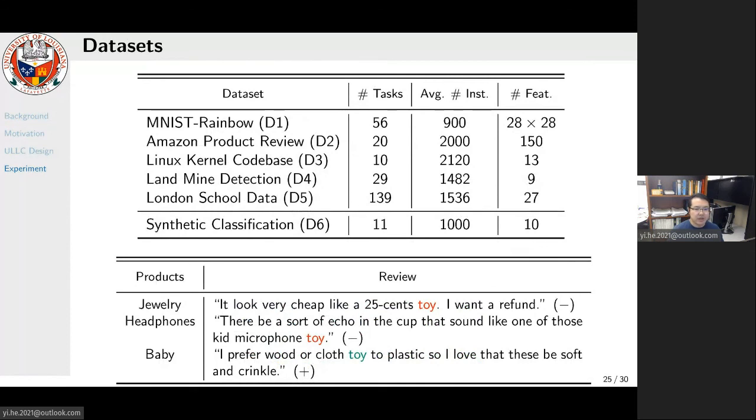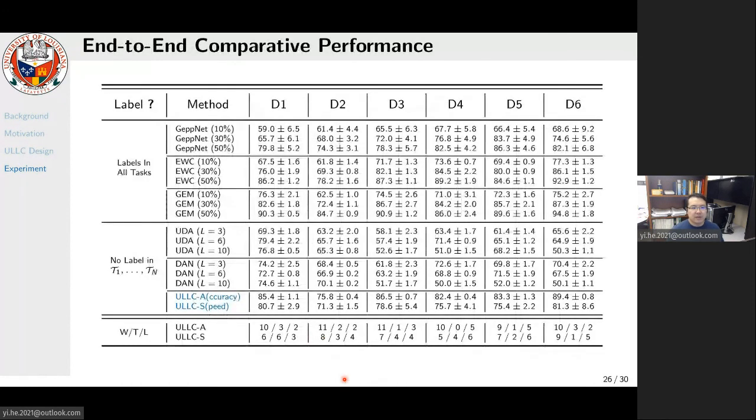In Amazon product reviews, we use reviews from different products as different learning tasks. In this example, we can see the word 'toy' conveys different semantic meanings in different tasks. For example, in the products of jewelry and headphones, when you say it's like a toy, it's more to say that this thing is too cheap and not worth buying. But in the product of baby usage, when you say toy, it's more neutral and does not convey any sentiment meaning. The results confirm that our approach can beat state-of-the-art unsupervised lifelong learning competitors and achieve comparable performance to supervised counterparts.